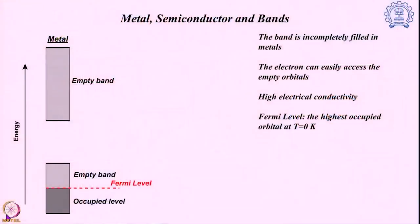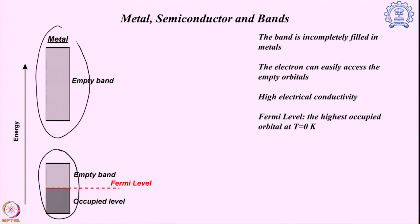Welcome back to the second segment of the discussion on semiconductor and metals band structure. In the previous section we discussed that band structure comes as an extension of molecular orbitals coming together. We showed the possible band structures for different systems — bands coming from different sets of orbitals: S band, P band, and even D electrons can give D bands. We also discussed band energies and the band gap, which depends on how many atomic orbitals are participating in bond formation and the initial energy gap between different sets of orbitals.